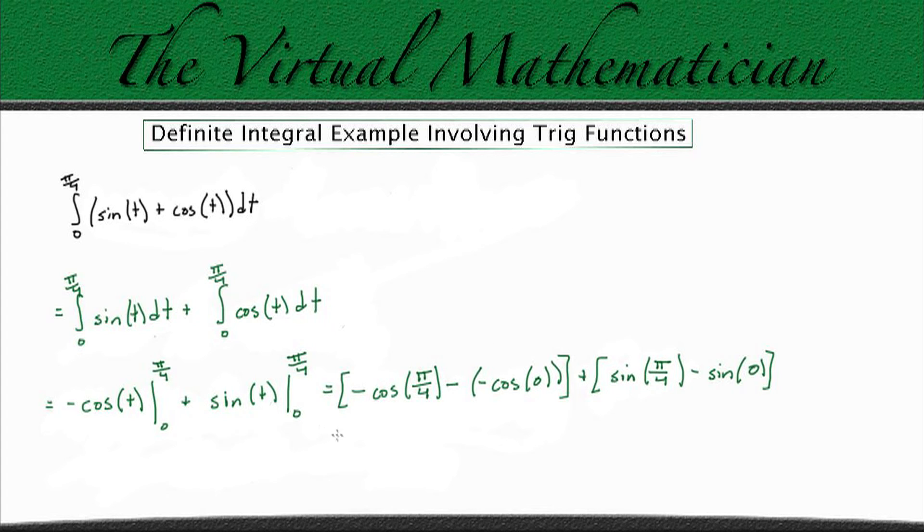So that means that we can simplify this to negative root 2 over 2, because cosine pi over 4 is root 2 over 2, minus negative cosine of 0, which if you remember cosine of 0 is just 1,